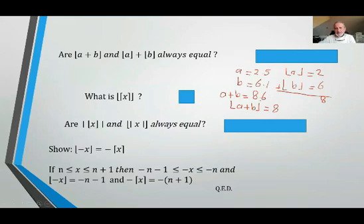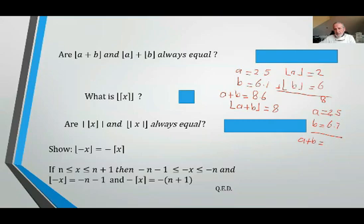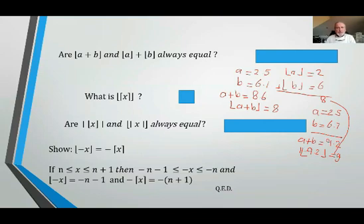Keeping a equals 2.5 but now taking b equals 6.7, the floor of a is still 2 and the floor of b is still 6. But a plus b is now 9.2, and the floor of 9.2 is 9, which is not equal to 2 plus 6 equals 8. So in general they are not equal. You can give a very simple counterexample to show these are not always equal.